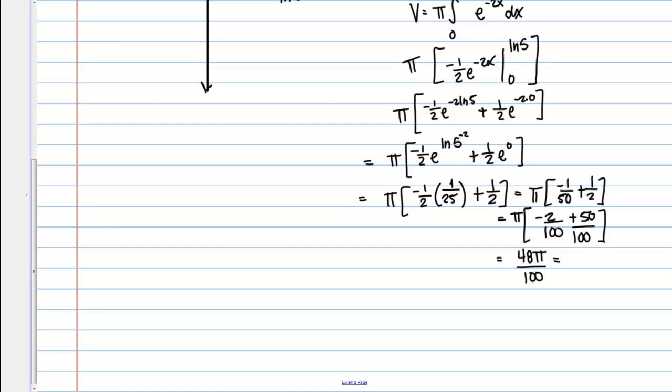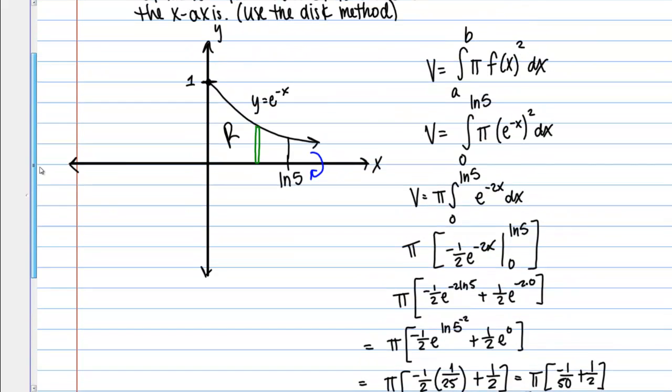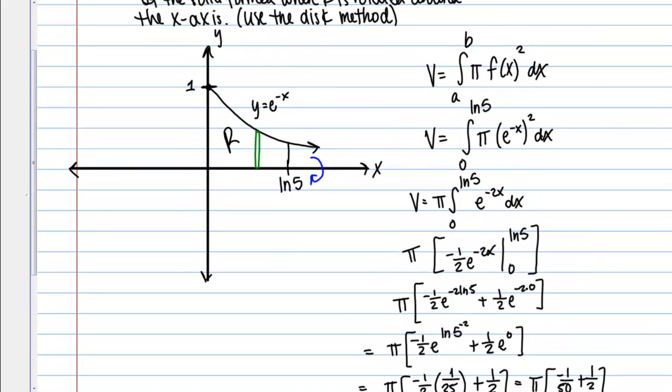Or if I reduce that by dividing top and bottom by 4, 12 pi over 25. And that is the volume of our solid of revolution.